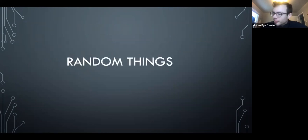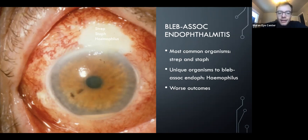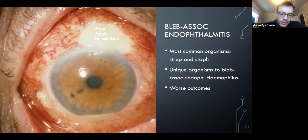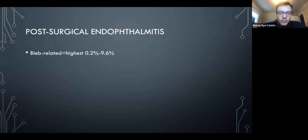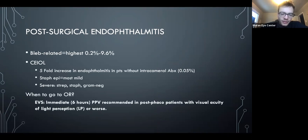Bleb-associated endophthalmitis: it can be staph or strep, but on OCAPs it'll probably be Haemophilus, which is unique to bleb-associated endophthalmitis — these eyes do poorly. The endophthalmitis vitrectomy study (EVS) was for cataract surgery and does not apply here. Post-surgical endophthalmitis: if light perception or worse, go straight to vitrectomy; if better vision, vitrectomy or tap-and-inject are both options.